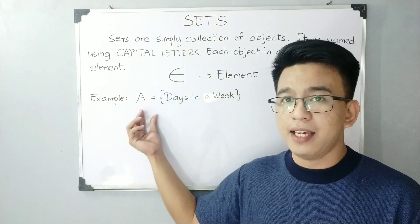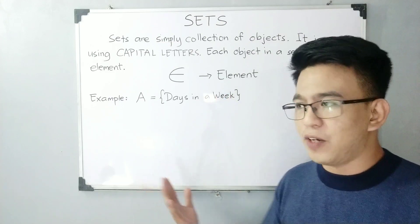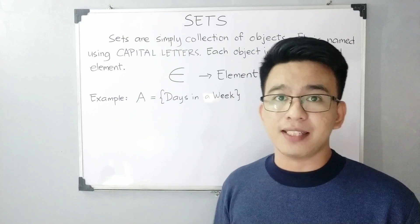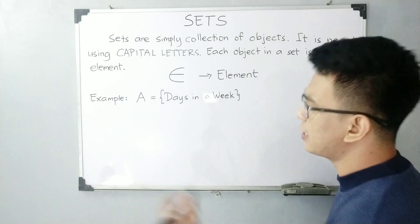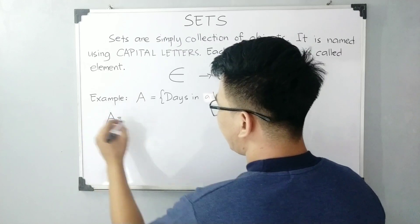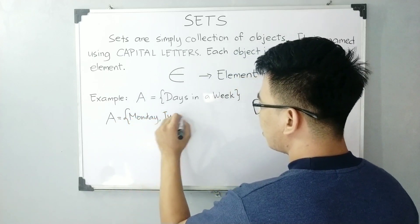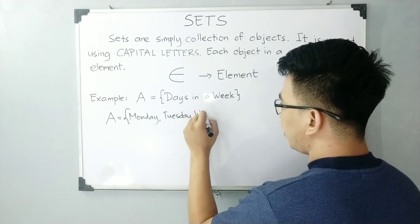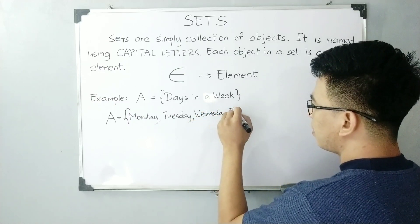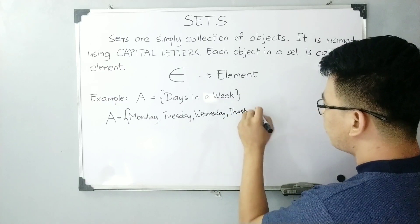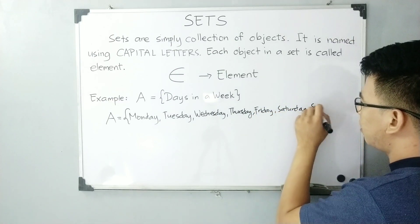We have here set A, wherein yung set A natin are the days in a week. So alam naman natin, in one week, we have seven days. Ang set A natin ay: Monday, Tuesday, Wednesday, Thursday, Friday, Saturday, and Sunday.